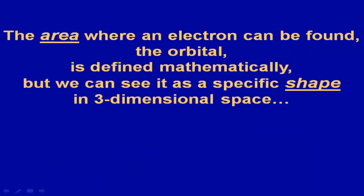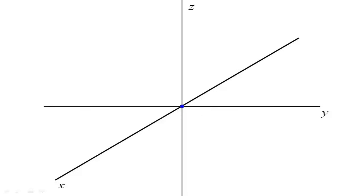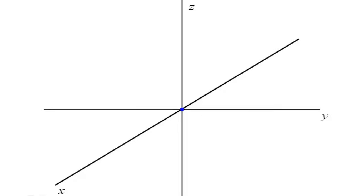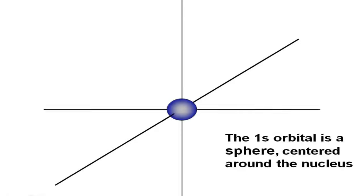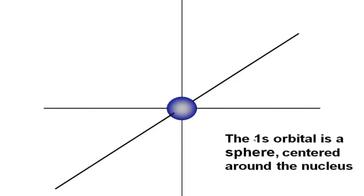The area where an electron can be found — the orbital — is defined mathematically, but we can see it as a specific shape in three-dimensional space. We define that space with the three axes x, y, and z, the intersection of which is our nucleus. Our first orbital is the 1s orbital. Orbitals are always designated with a number and a letter: the letter designates the shape, and the number designates the energy level. The 1s orbital is the lowest energy orbital, and the electrons in it are the lowest energy electrons.